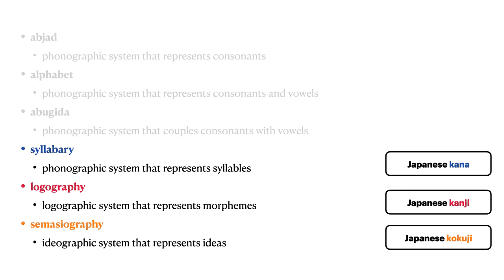The Japanese writing system is probably the most complex writing system used today, with multiple different subsystems. The kanji symbols are derived from Chinese symbols and are primarily logographic in nature. The Japanese kana symbols are syllabic and form two distinct syllabaries.